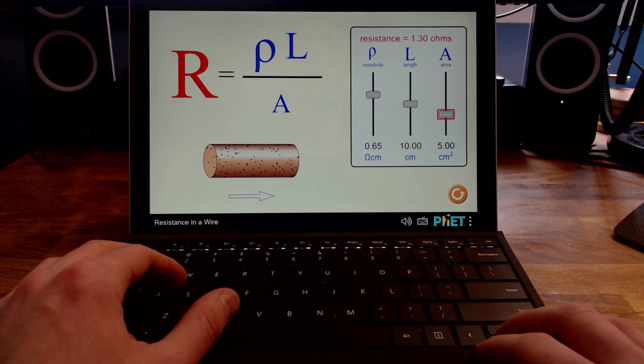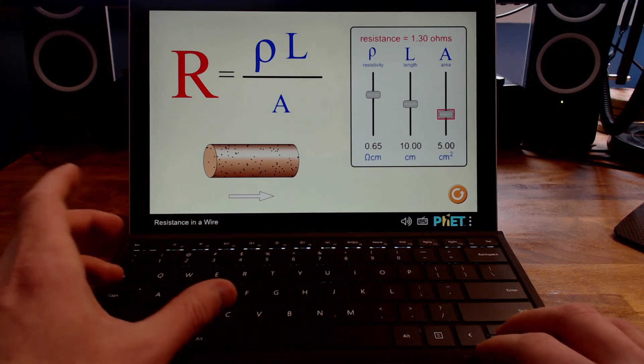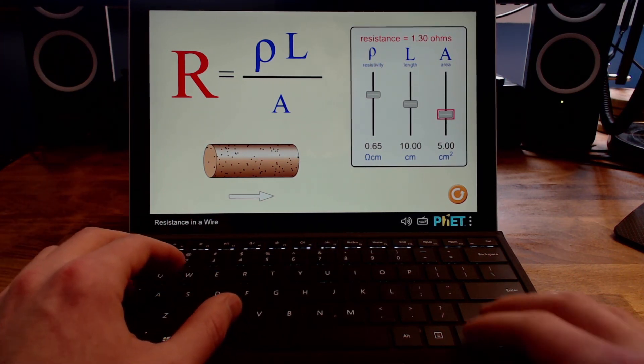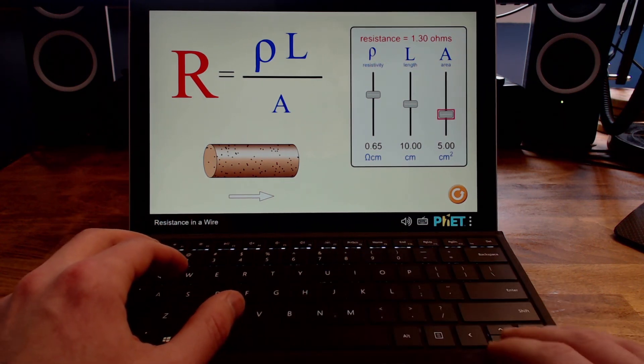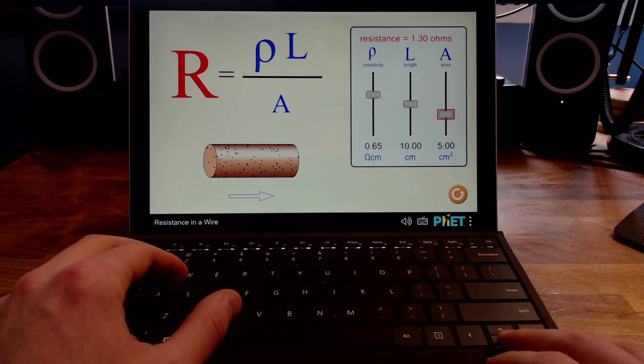And let's return to Browse Mode to hear again about the wire and see if anything has changed. Slider controls heading, the wire heading level 3. Currently, wire is of medium length, thin, and there is a large amount of impurities in wire. Huh. It sounds like the wire has gotten thinner.